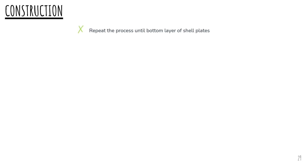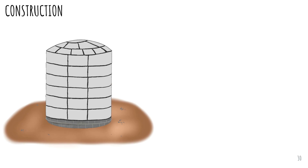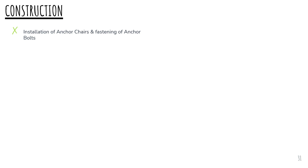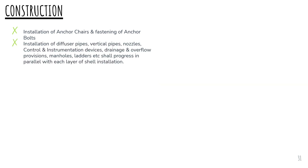This process will be repeated until the bottom layer of shell plates. Once all shell plate installations are completed, anchor chairs will be welded onto the bottom-most layer and the anchor bolts will be fastened over it. Installation of diffuser pipes, vertical pipes, nozzles, control and instrumentation devices, drainage and overflow provisions, manholes, ladders, etc., shall progress in parallel with each layer of shell installation.